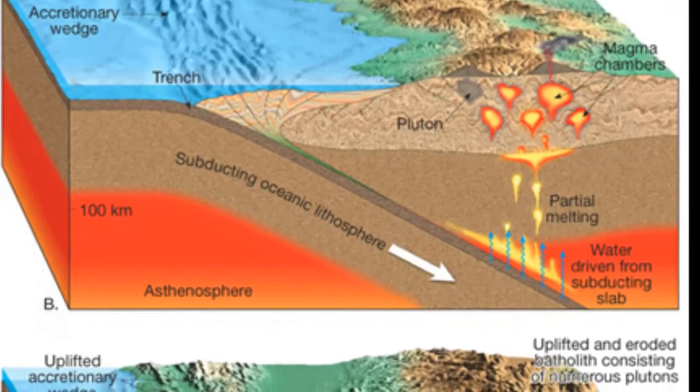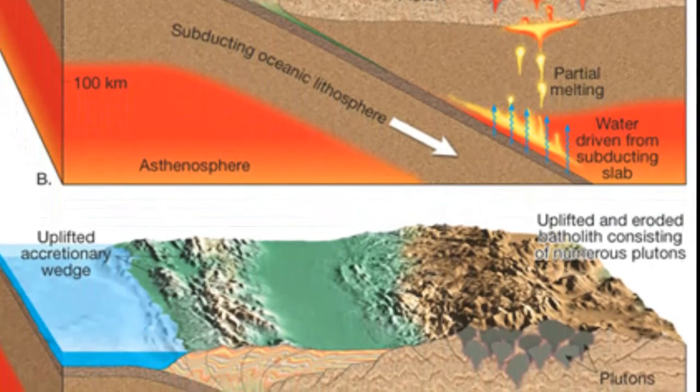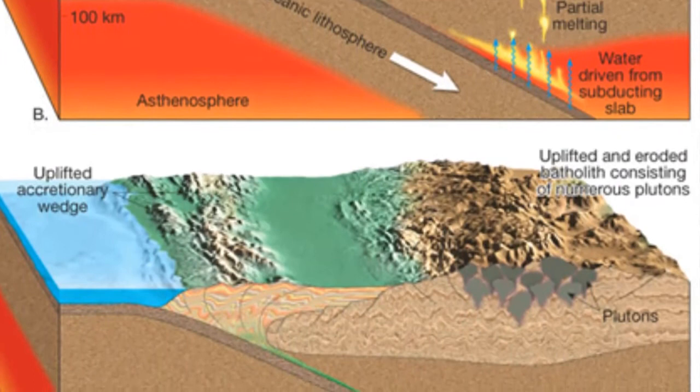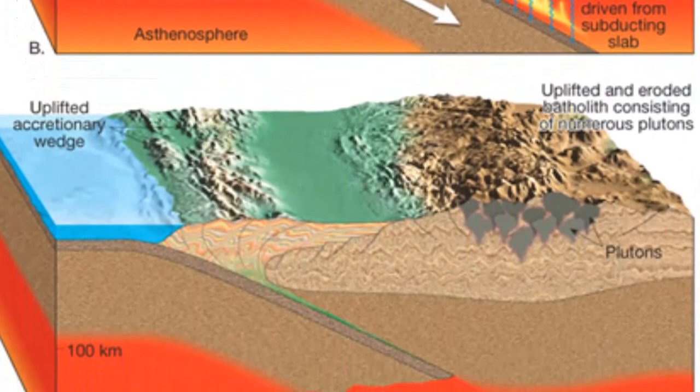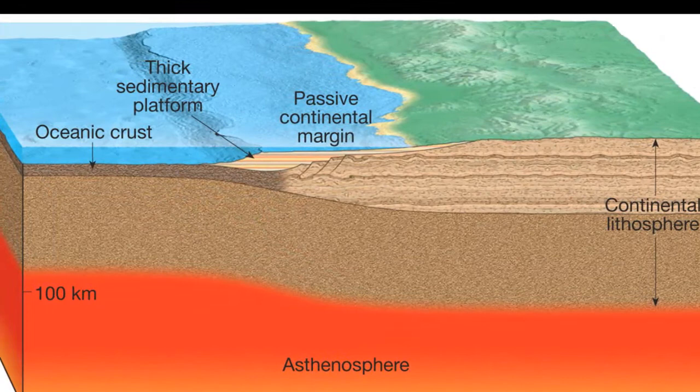Partial melting of mantle rock, principally peridotite, generates primary magmas with basaltic composition. Because they are less dense than the rocks from which they originated, these newly formed basaltic magmas will buoyantly rise. Upon reaching the base of the continental crust, which consists of low-density rocky components, these basaltic magmas typically collect or pond.